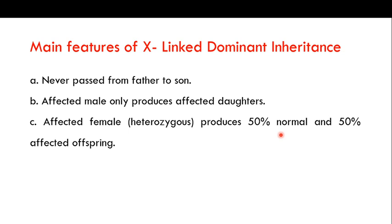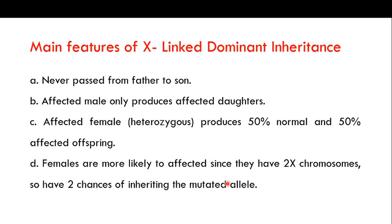Females are more likely to be affected than males since they have two X chromosomes, giving them two chances of inheriting the mutated allele. Also, just like autosomal dominant inheritance, you would not see any skipping of generations — there will be an affected individual in every generation.